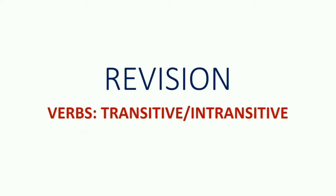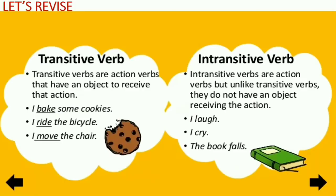As you know, verb means action word. It has two types: transitive and intransitive verb. Let's learn the meaning of both. A transitive verb is a verb that has an object to receive the action. Intransitive verbs do not have any kind of object to receive the action.